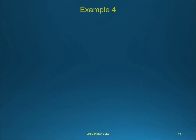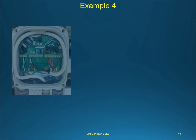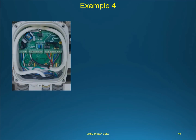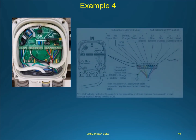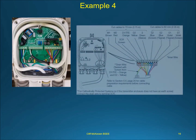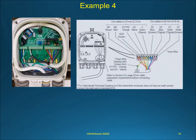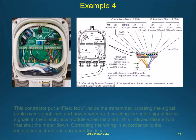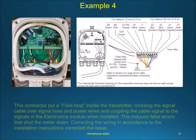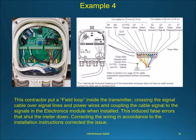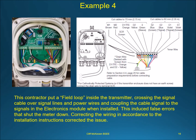This contractor put a field loop inside the transmitter, crossing the signal cable over signal lines and power wires, coupling the cable signal to the signals in the electronics module when installed. This induced false errors that shut the meter down. Correcting the wiring in accordance with the installation instructions corrected the issue.